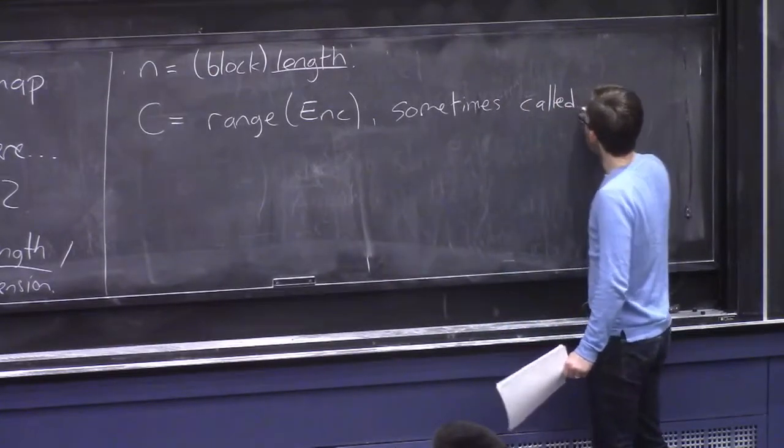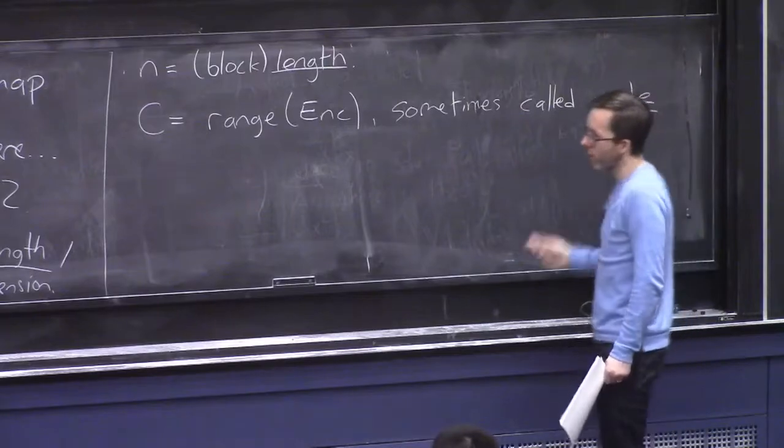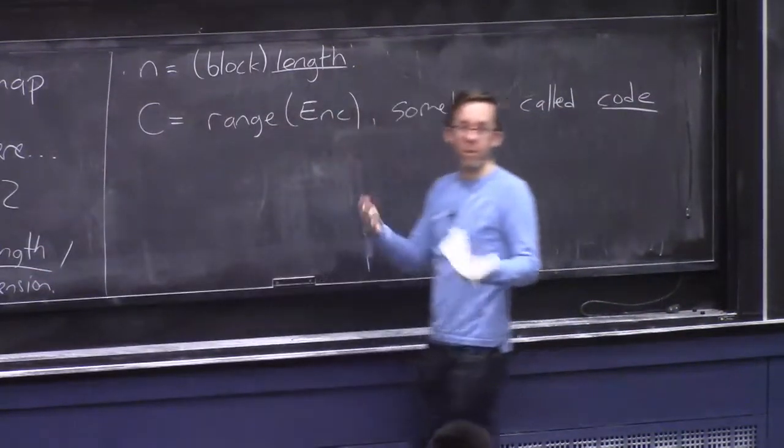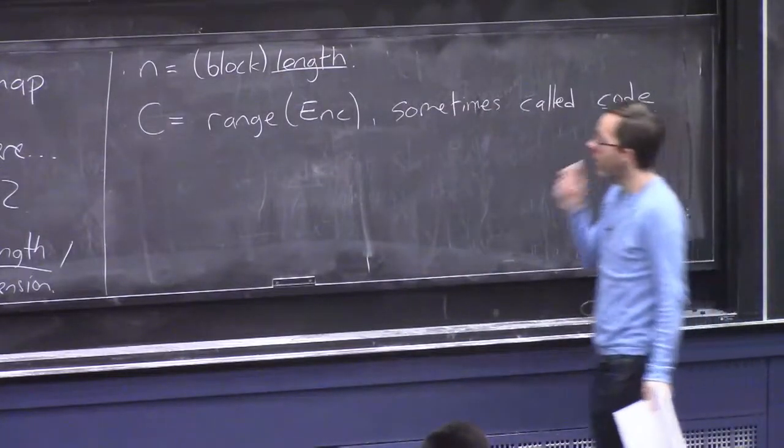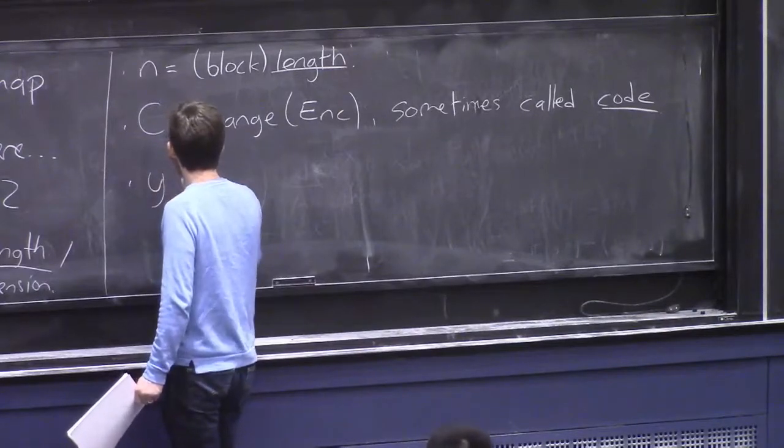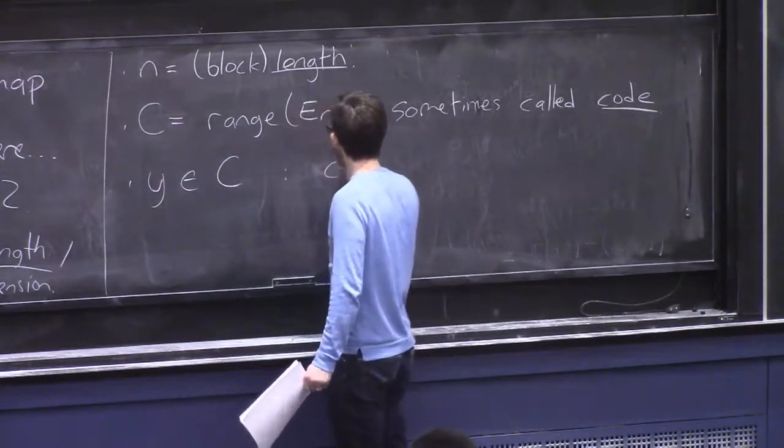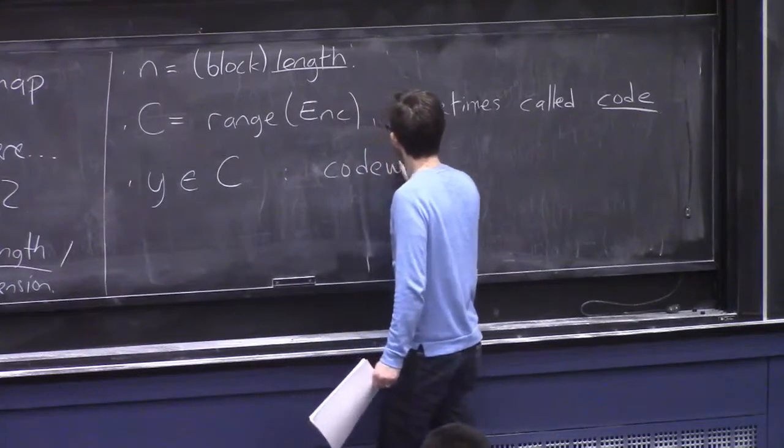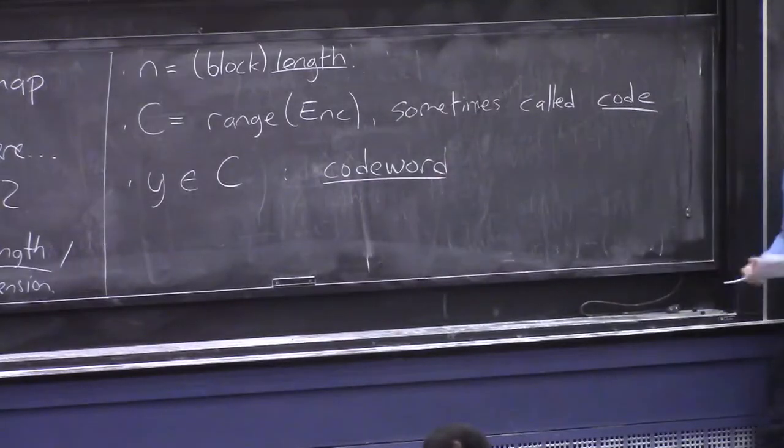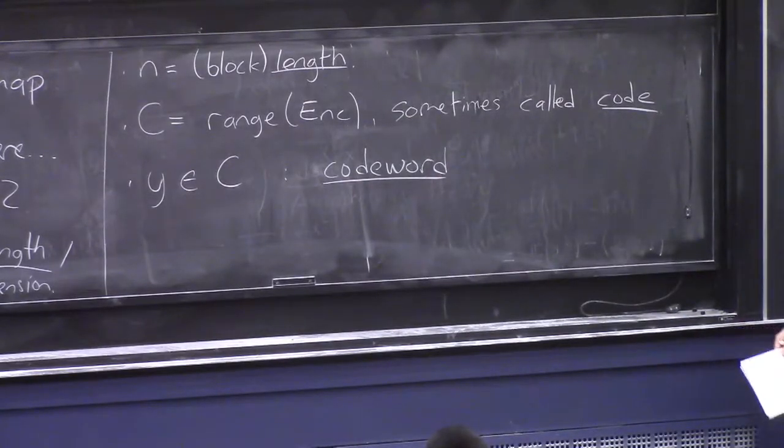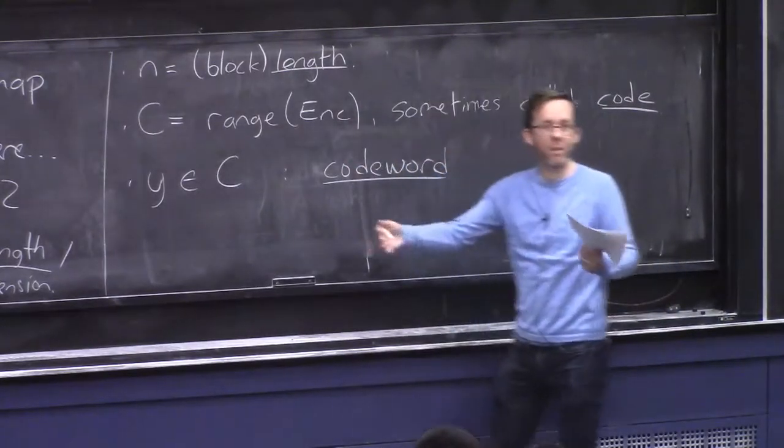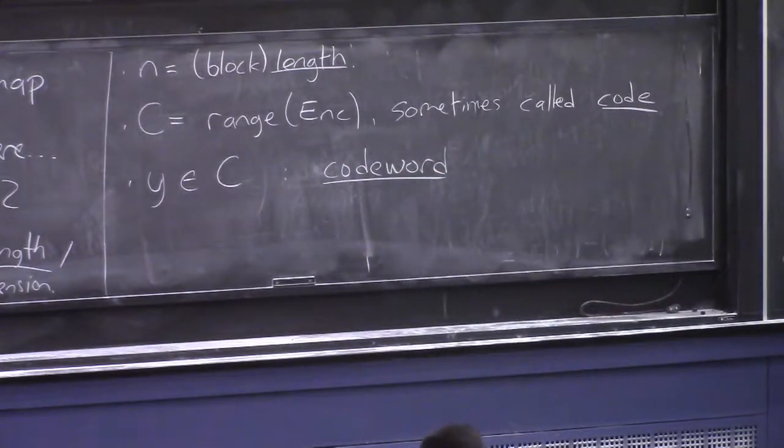So sometimes by a bit of an abuse of notation or terminology, we don't distinguish too much between the encoding and just the set of outputs of the encoding map. These are called the code words. So any string which is actually inside this set C is called a code word. Generally N will be bigger than K, so the set of all outputs of the encoding function is like a sparse subset of all possible length N strings.